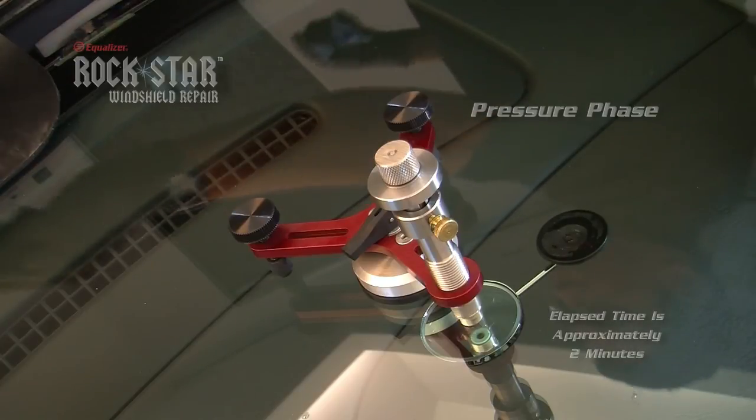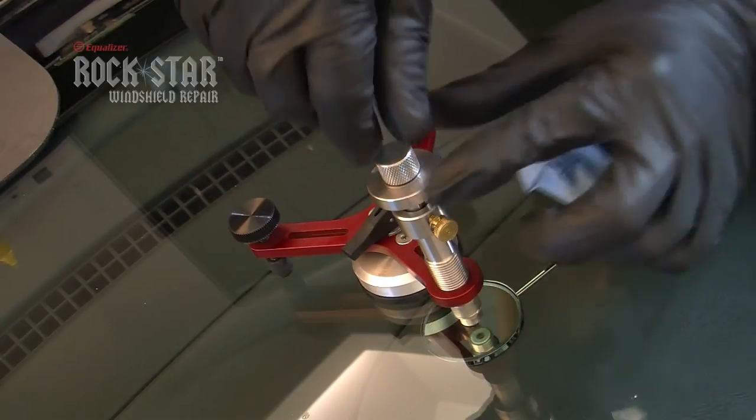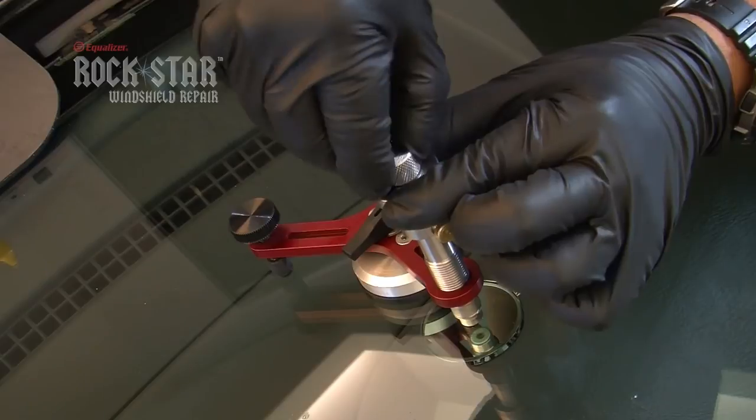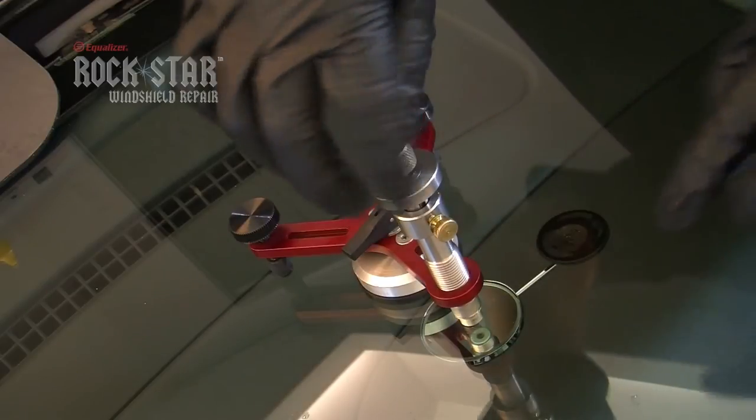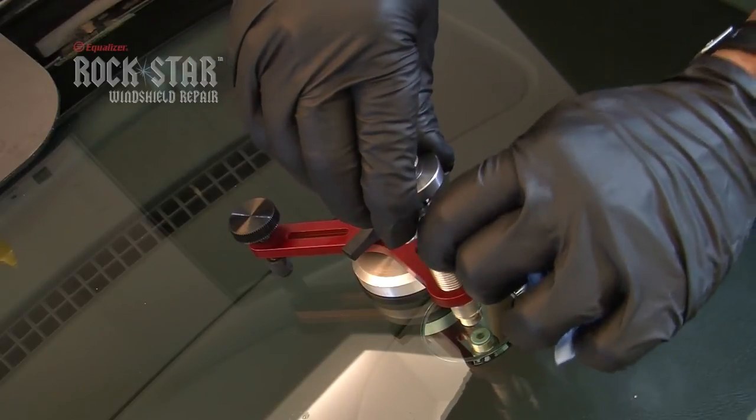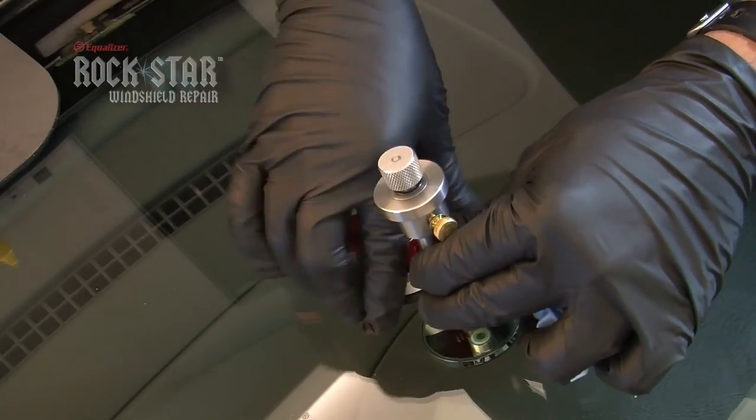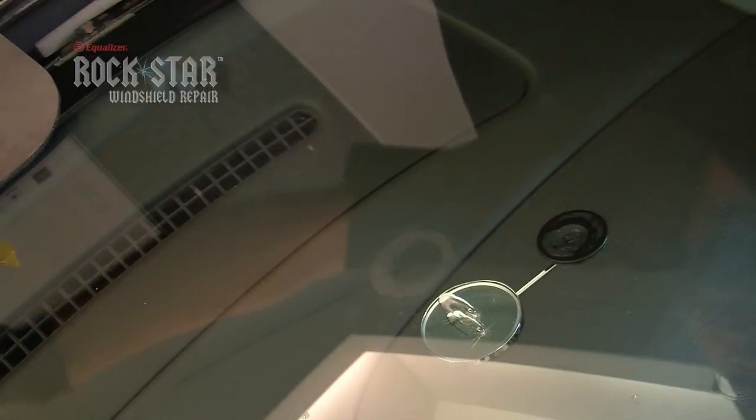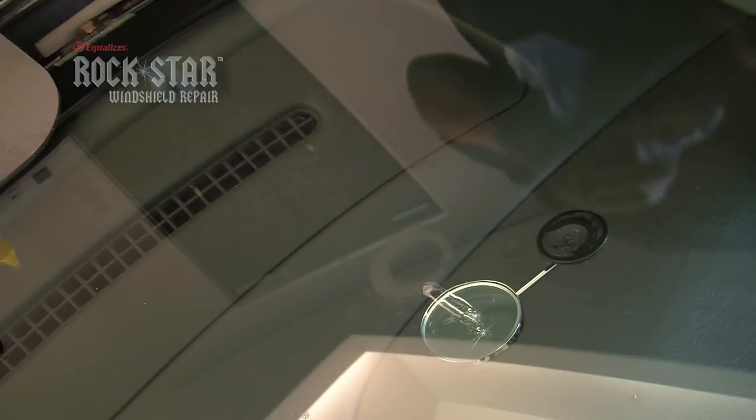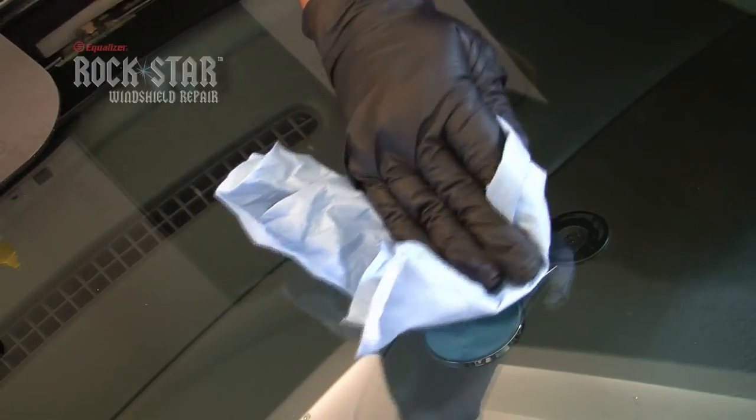For stubborn breaks you might have to repeat vacuum to pressure cycles until the break is fully filled. When the repair is to your satisfaction, release the pressure by loosening the injector pressure rod. Release the lever on the vacuum cup. Remove the bridge and injector assembly. Wipe away any residual resin.